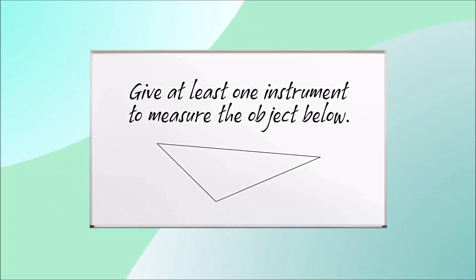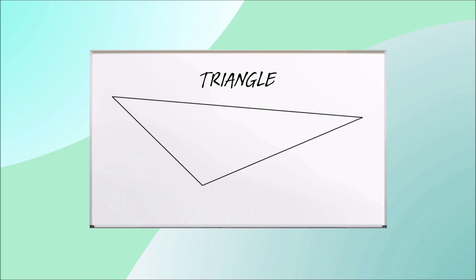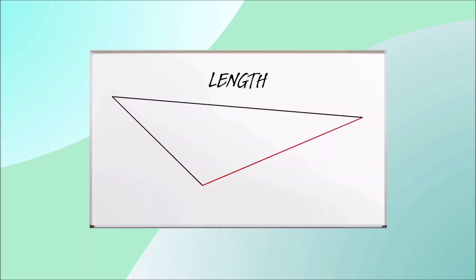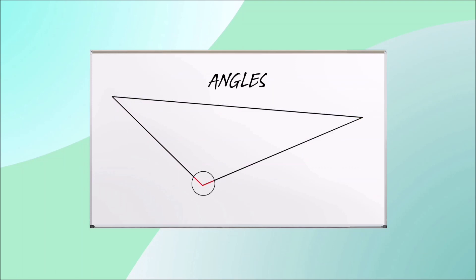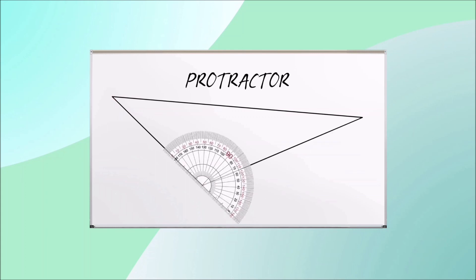Let's take a look at the question of the teacher: give at least one instrument to measure the object below. The object is a triangle. A triangle has sides and corners. The length of the sides can be measured using a ruler, and the angles of the corners can be measured using a protractor.